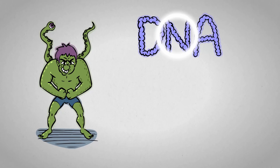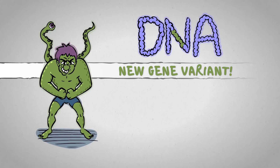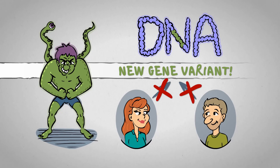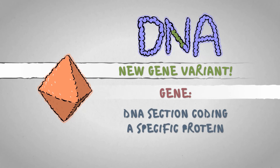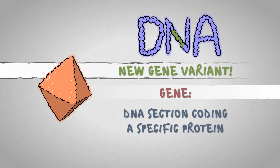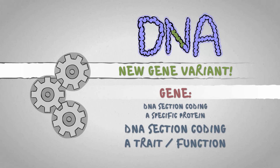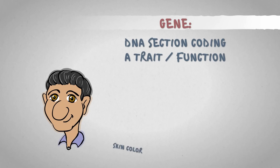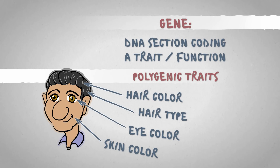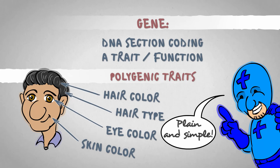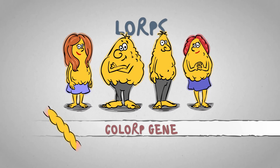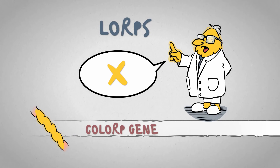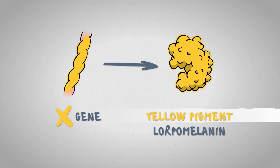But let's get back to the mutant individual who has at least one gene with a new code. This gene variant is not present in either one of the parents because it's the result of mutation. We discussed earlier that genes are protein-coding DNA sections, but it's more practical to regard them as DNA sections coding specific characteristics or functions. Most of our striking features are determined by a combined effect of multiple genes, so for the purpose of a simple demonstration, let's look at a fictional example. These are the LORPs. Their yellow skin color is coded by the COLORP gene, abbreviated as X by every LORP geneticist worth their salt. The X gene produces a yellow pigment protein called LORP-melanine.